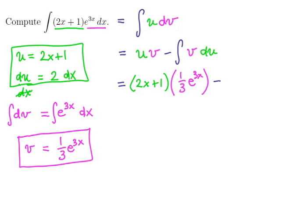And we're going to subtract the integral of v again. So we'll have 1 third e to the 3x times the differential du, which is just 2dx.